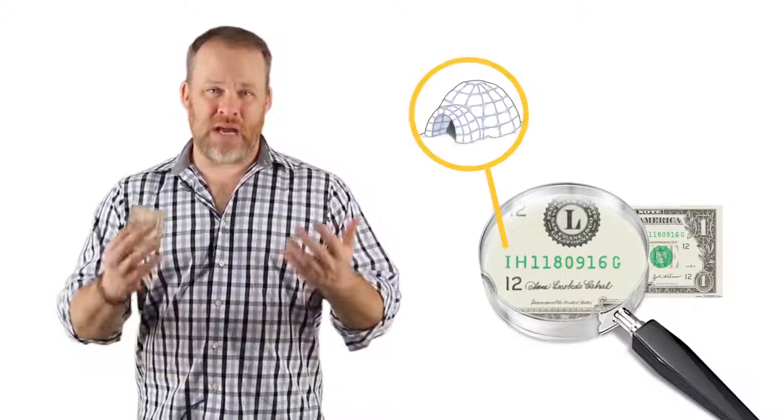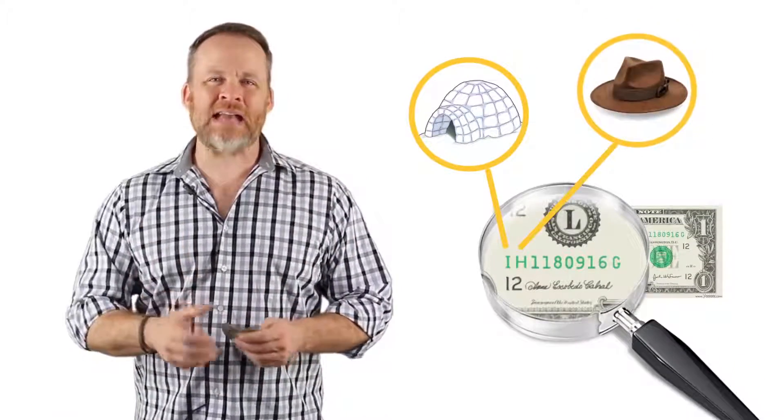In Times Square somebody would hand me a dollar bill and I would open it up and the first two letters would say I-H. Well, I for me was an igloo like in Alaska and H was a hat. So on my first piece of furniture, I would imagine an igloo to remember the letter I. On my second piece of furniture, I would imagine taking off a hat and setting it on there to remember H.